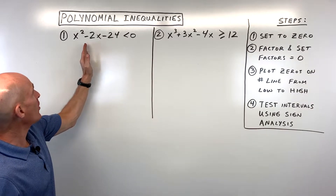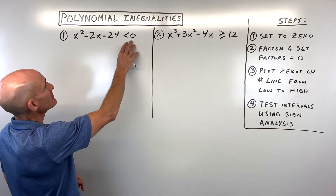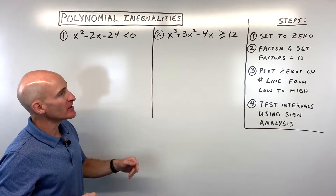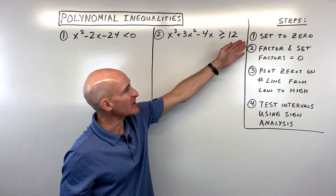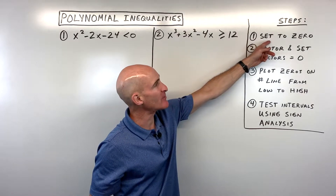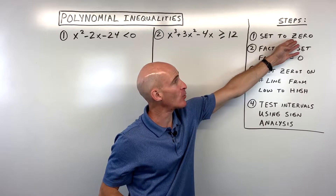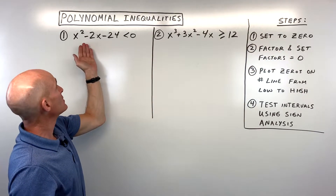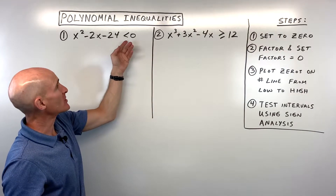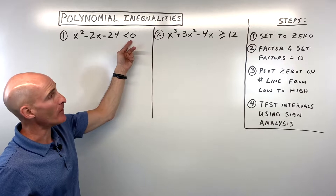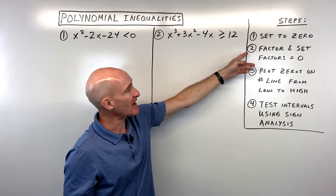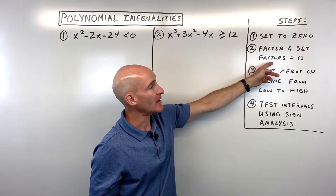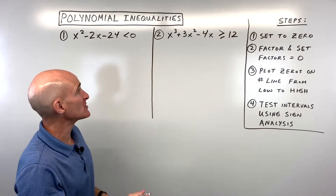For the first example, say we wanted to solve this polynomial inequality. The first step is you want to get everything on one side of the inequality and set it to zero — you can see that's already the case here. The second step is you want to factor and set the factors equal to zero.